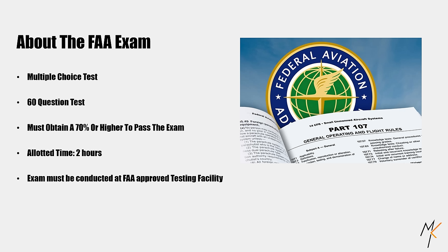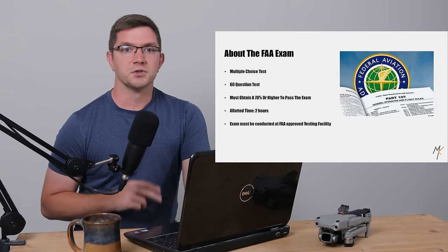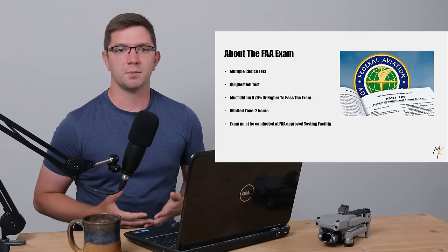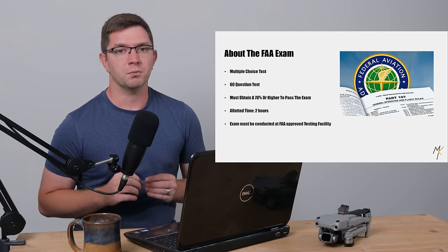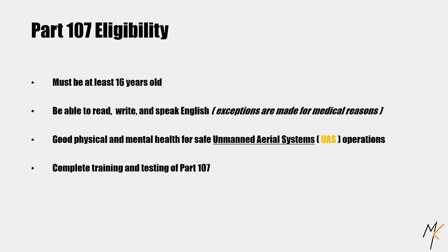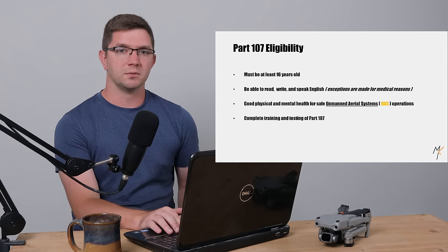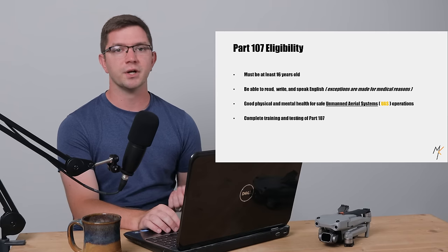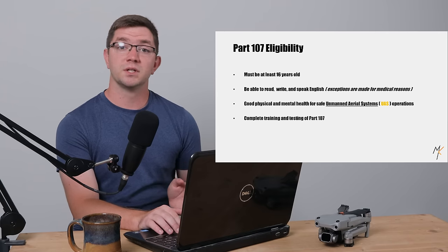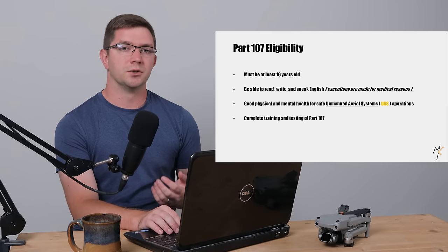Here's a bit more info about the FAA exam. Your exam is conducted at an approved FAA testing facility — not at home or online. You'll be given two hours to answer 60 multiple choice questions on any of the topics covered in this video. The FAA can choose to test you more heavily on one topic over another. You must pass with a 70% or higher. If you fail on the first attempt, you can retake the exam after 14 days. To be eligible, you have to be 16 years or older, able to speak, read, and write English, and be healthy both physically and mentally to safely perform drone operations under Part 107.